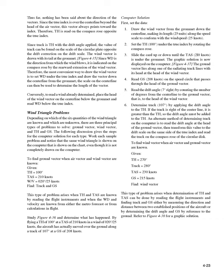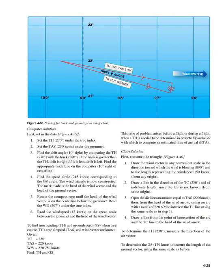An alternate method of determining track on the computer is to read the drift angle at the head of the ground vector, then transform this value to the drift scale on the same side of the true index and read the track on the compass rose. To find wind vector when air vector and ground vector are known. Given: TH = 270°, track = 280°, TAS = 230 knots, GS = 215 knots. Find: wind vector. This type of problem arises when TH and TAS can be read from flight instruments and track and GS are determined by measuring direction and distance between two established positions.